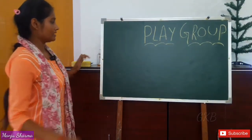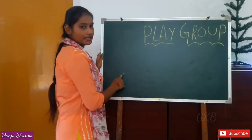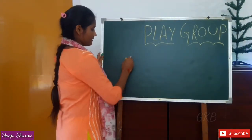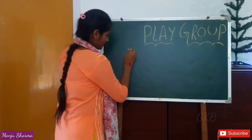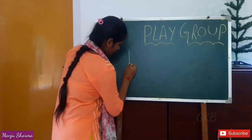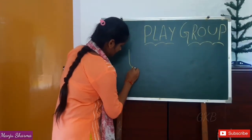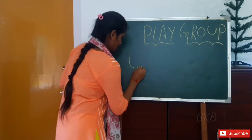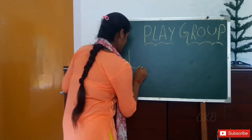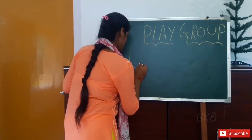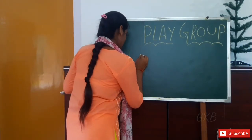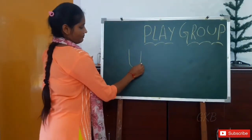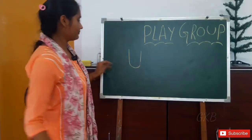Let's start. First, draw a standing line, then slightly curve, then draw a standing line up.